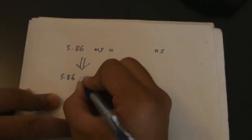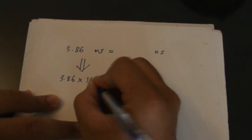In this example, 3.86 milliseconds, you want to change to nanoseconds. This involves two steps. First step: 3.86 milli—milli is how much? Milli is 10 power of negative 3.